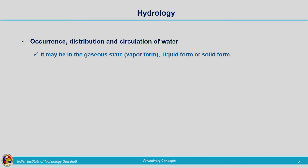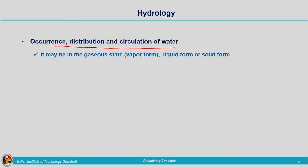What is meant by hydrology? Hydrology is the science that deals with the occurrence, distribution, and circulation of water. Water is present in the earth, on the surface of the earth, beneath the earth, and also above the surface of the earth — that is in the atmosphere — in different forms such as vapour, liquid, and solid. The study related to that is termed as hydrology.